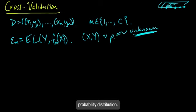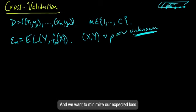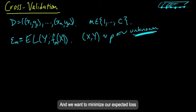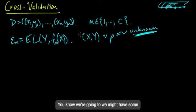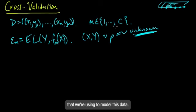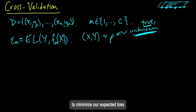Some true probability distribution that is unknown to us. So this is the true probability distribution. And we want to minimize our expected loss under this true distribution. So this is not the P that we're using for our model. We might have some probabilistic model, but this P is the true distribution.